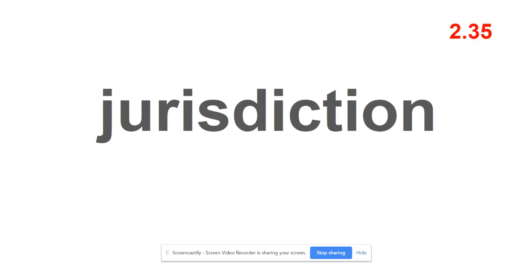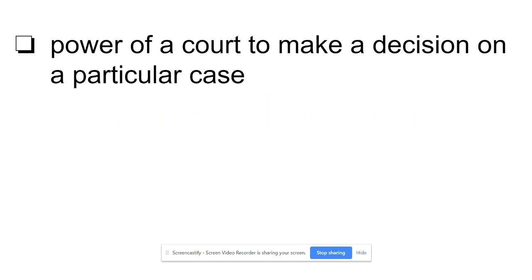The last term is 2.35: jurisdiction. Jurisdiction is a really simple idea and has to do with courts. The beginning of the word is 'jury,' so you can think it has to do with courts. Jurisdiction means the power of a court to make a decision on a particular case. For example, if you get a speeding ticket in Salem, you will go to traffic court.